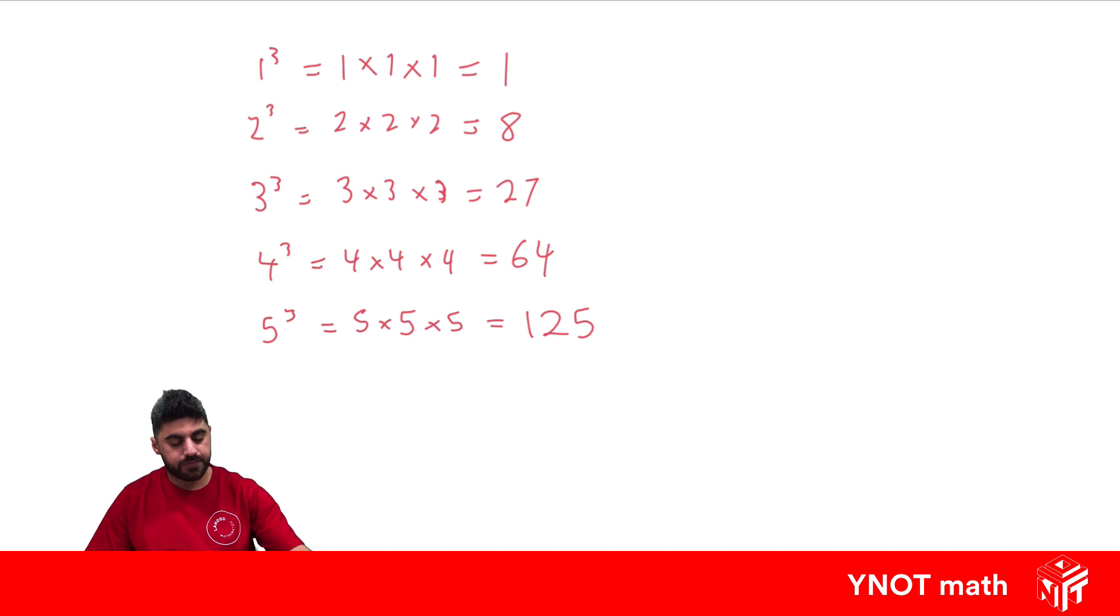So when we do cube roots, it's very similar to square roots and has the same symbol, but with a little 3. So we come up with the cube root of 1. The cube root of 1 means what number times itself 3 times equals this number inside here? Well, we know 1 times itself 3 times gives us 1. The cube root of 8, well that's 2. Cube root of 27, well what number times itself 3 times gives us 27? And that's 3. And hopefully you get the idea from here.